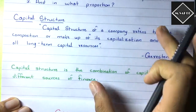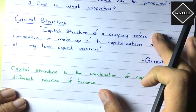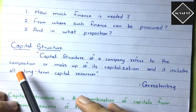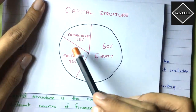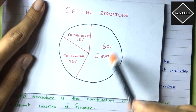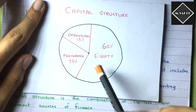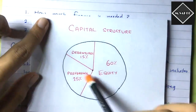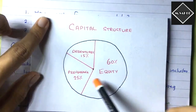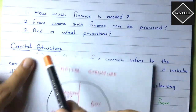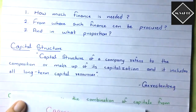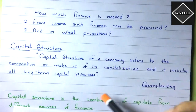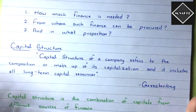So capital structure is very simple — it is the combination of capitals from different sources of finance: debentures from debt, preference shares, and equity. It is just a composition, a mix, a blend, a makeup of capitals. That's it.